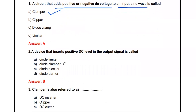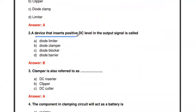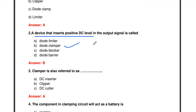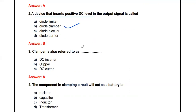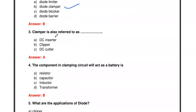Next question: A device that inserts a positive DC level in the output signal is called a — diode limiter, diode clamper, blocker, or barrier clamper? The clamper inserts either a positive or negative DC level. If positive DC level is inserted, it is called a positive clamper; if negative DC level is inserted, it is called a negative clamper.